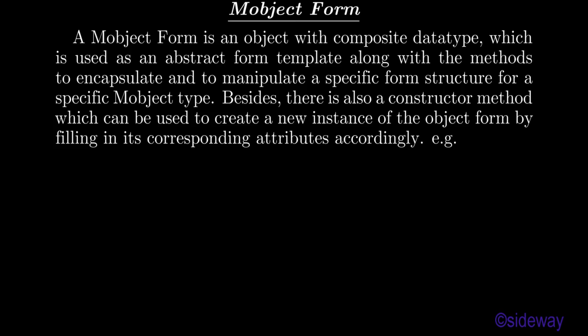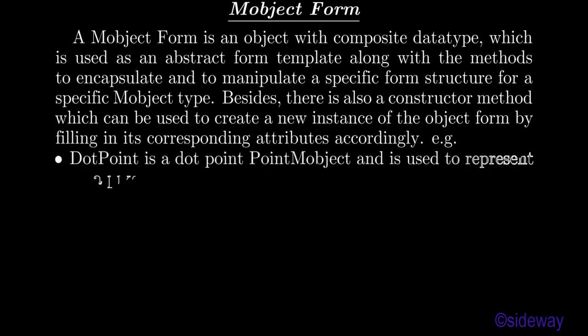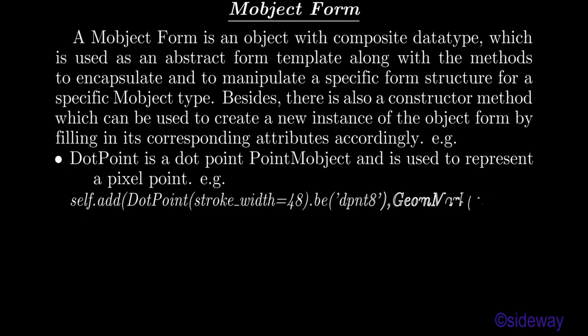For example, .point is a dot-point PointMobject and is used to represent a pixel point. For example: self.add(.point, stroke_width=48, .b.dpnt8, geometry_mark.b.dpnt8). ImageMobject is used similarly — for example: self.add(ImageMobject.b.bmobj8, geometry_mark.b.mobj8).